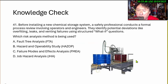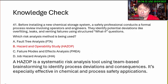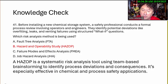Before installing a new chemical storage system, like a drumming system, a safety professional conducts a formal process review involving operators and engineers. They identify potential deviations — overfilling, leaks, and venting failures — using structured what-if questions. What risk analysis method is being used? A, fault tree analysis. B, hazard operability study. C, failure modes and effect analysis. D, job hazard analysis. The answer is HAZOP — a systematic risk analysis tool using team-based brainstorming to identify process deviations and consequences, precisely effective in chemical process and safety applications.